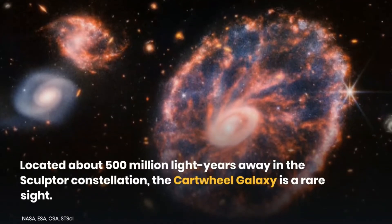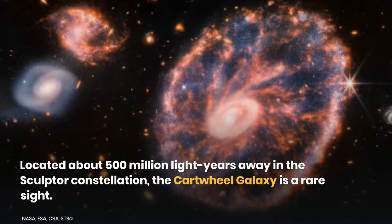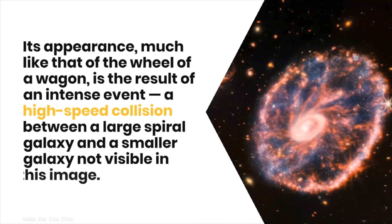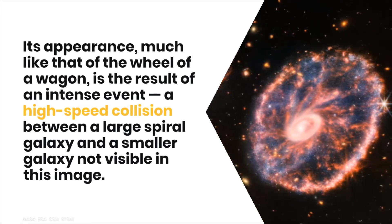Located about 500 million light years away in the Sculptor constellation, the Cartwheel Galaxy is a rare sight. Its appearance, much like that of the wheel of a wagon, is the result of an intense event: a high-speed collision between a large spiral galaxy and a smaller galaxy not visible in this image.